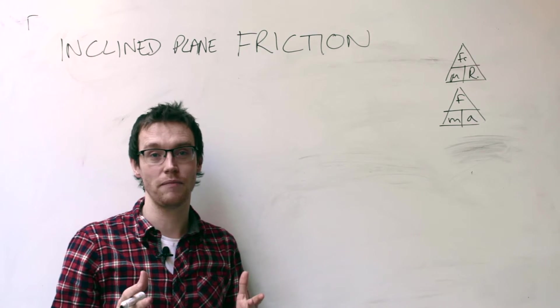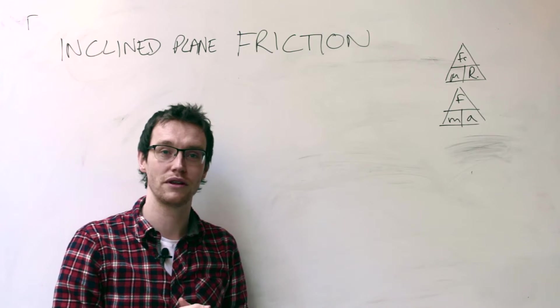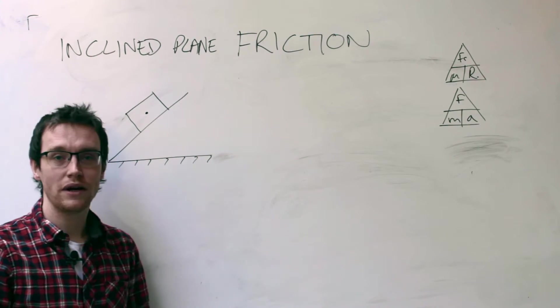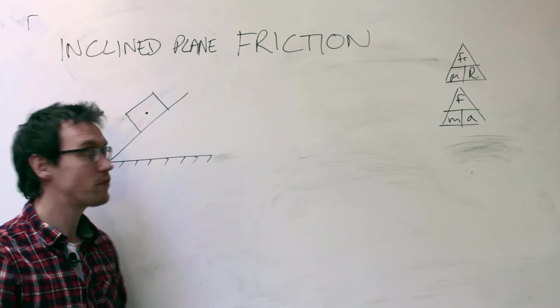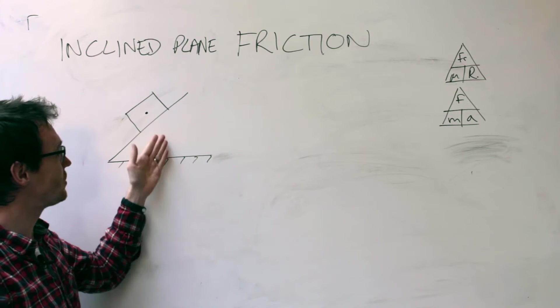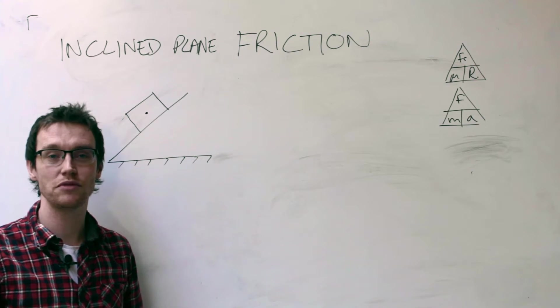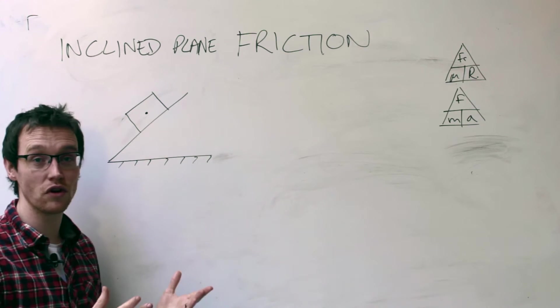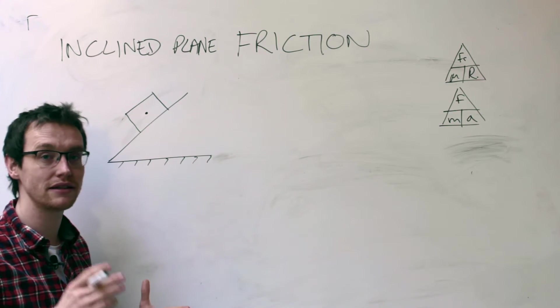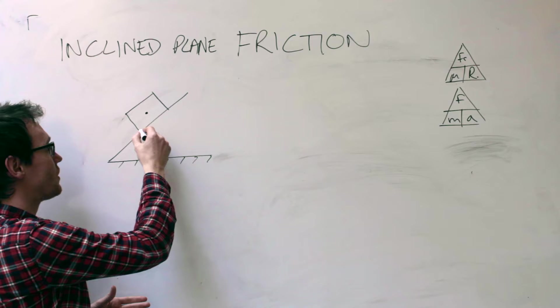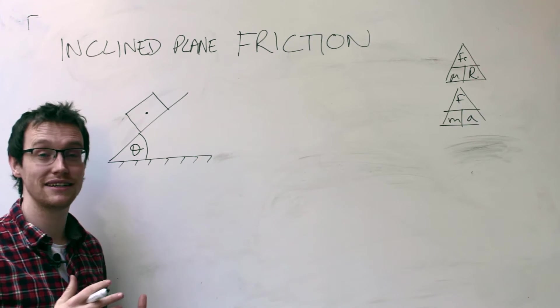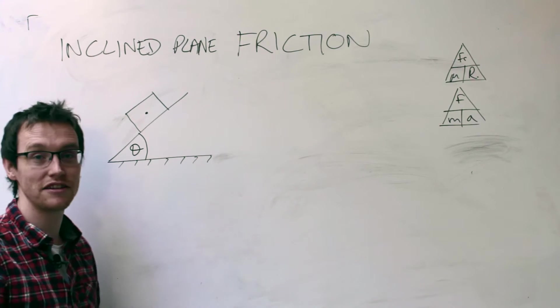So I'm going to set up a free body diagram, we'll talk it through and then work through the problem. This should look familiar by now - this is a block resting on an inclined plane and we need to put on some of our important forces. First of all we don't know the angle, we're trying to find the angle of sliding.